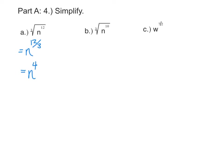For the cubed root of n to the tenth, we could try the same trick and remember that the power is the numerator and the root is the denominator. But ten divided by three doesn't really simplify. So maybe we go back to looking at it as the cubed root of n to the tenth, and ten we can break up into groups of three — n cubed times n cubed times n cubed gives us nine n's, and we'll need one more to make ten.